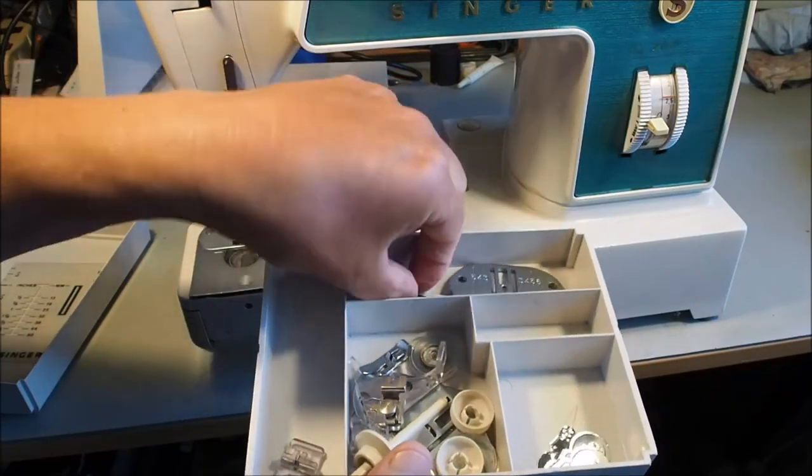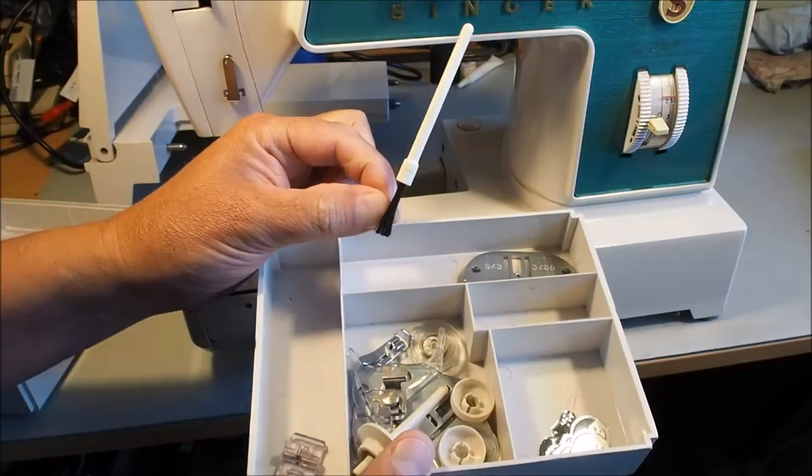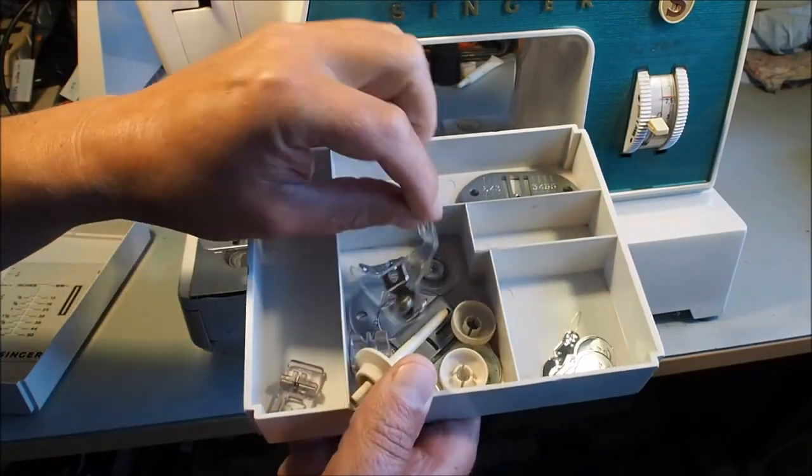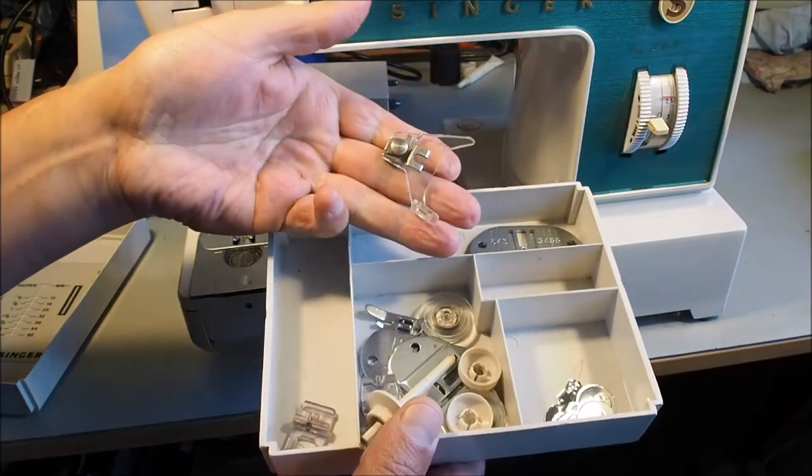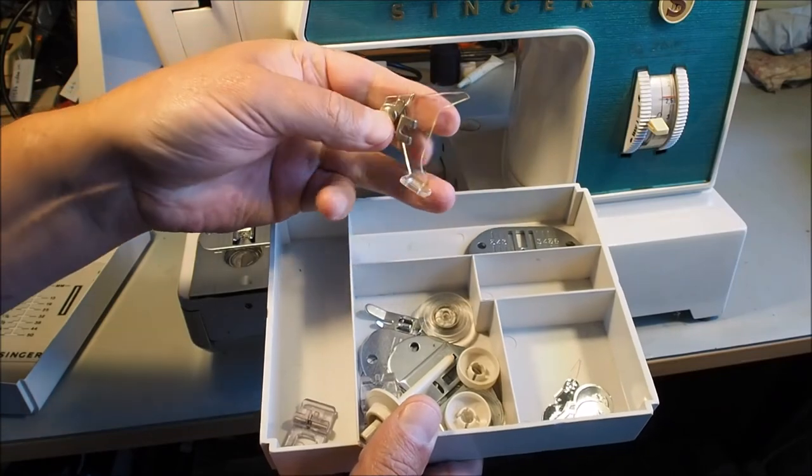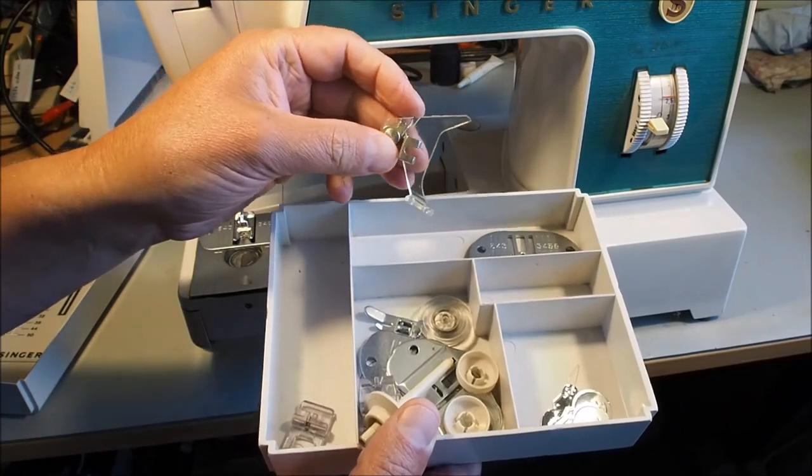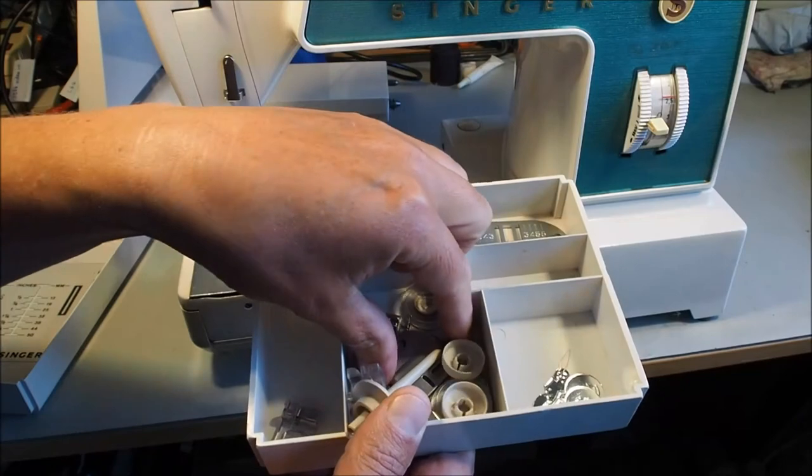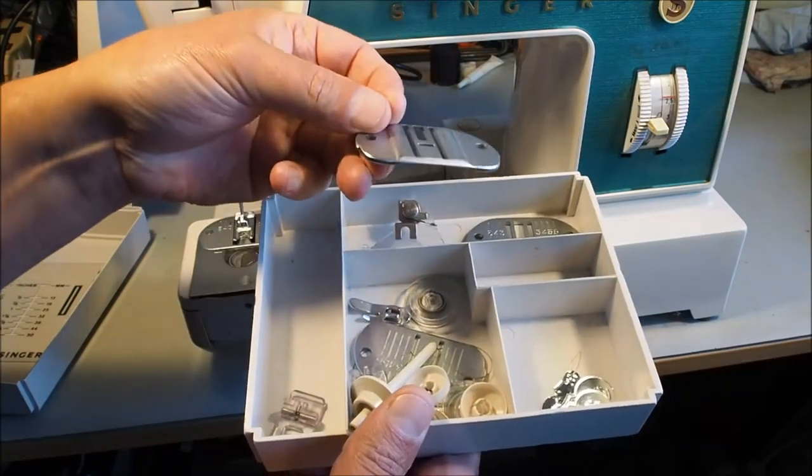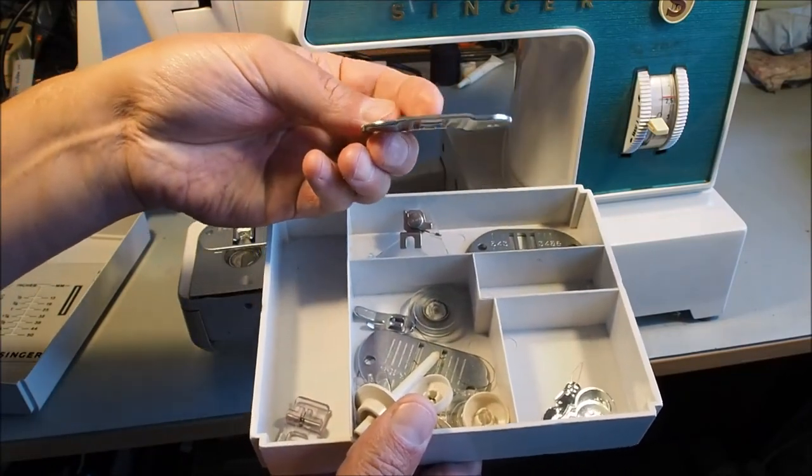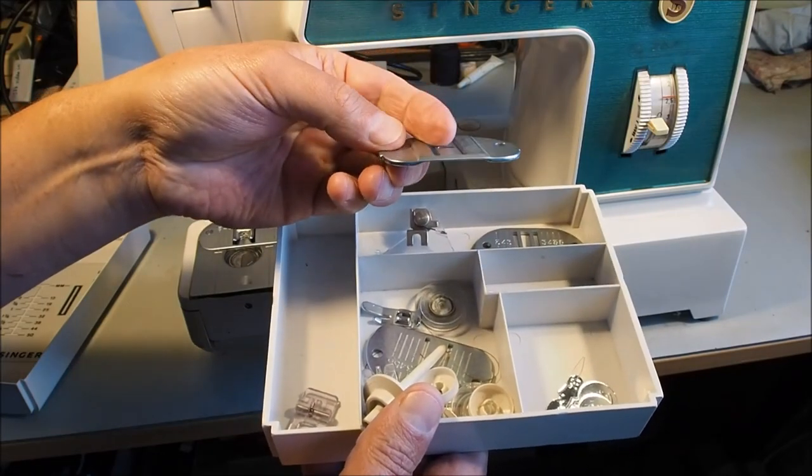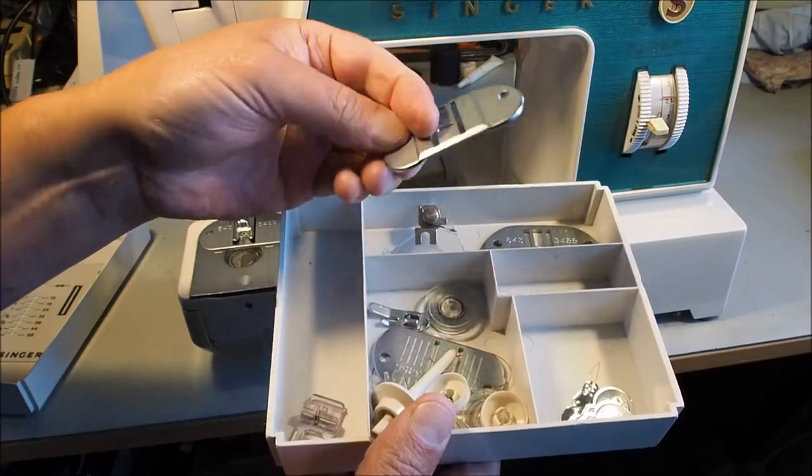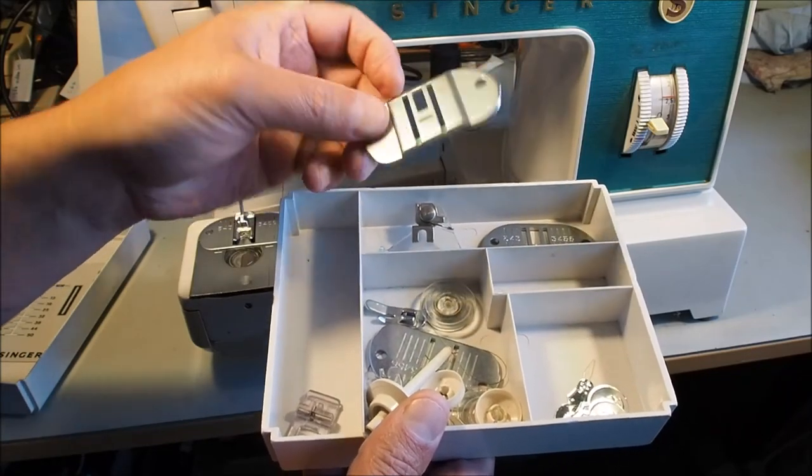There's a little brush and the free motion darning foot for free motion sewing, embroidery, and darning. You use this raised plate in conjunction with it - it's similar to a drop feed. You put that in position and it masks the feed dogs off so they don't feed.